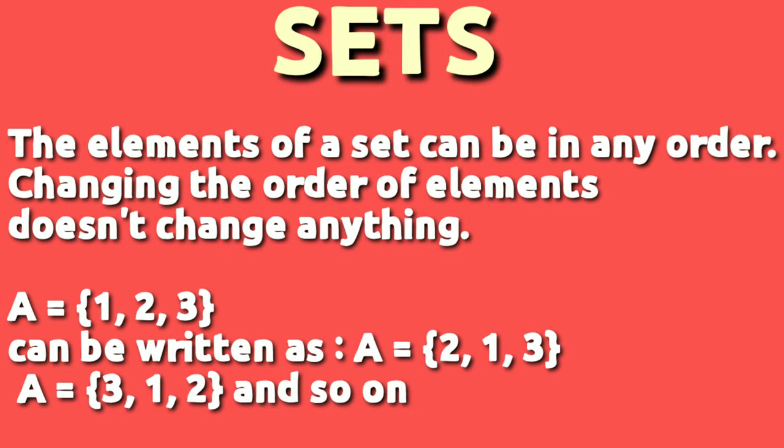The elements of a set can be in any order. Changing the order of elements doesn't change anything. A equals 1, 2, 3 can be written as A equals 2, 1, 3, and A equals 3, 1, 2, and so on.